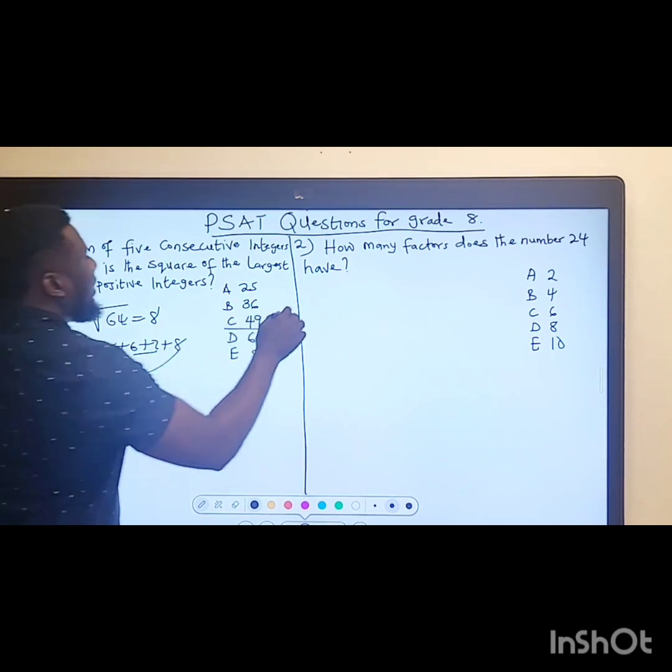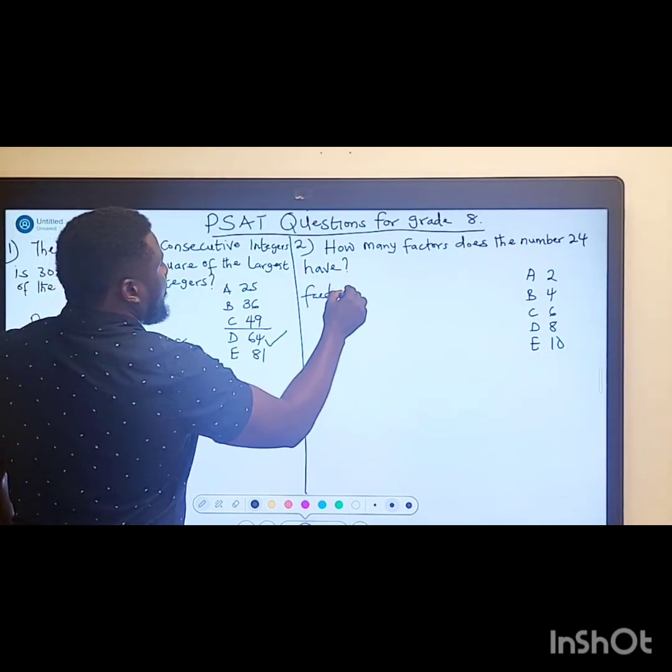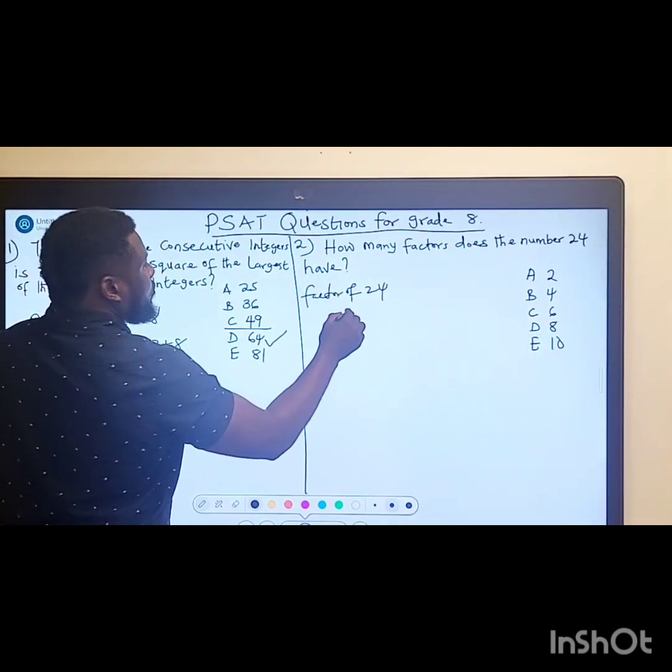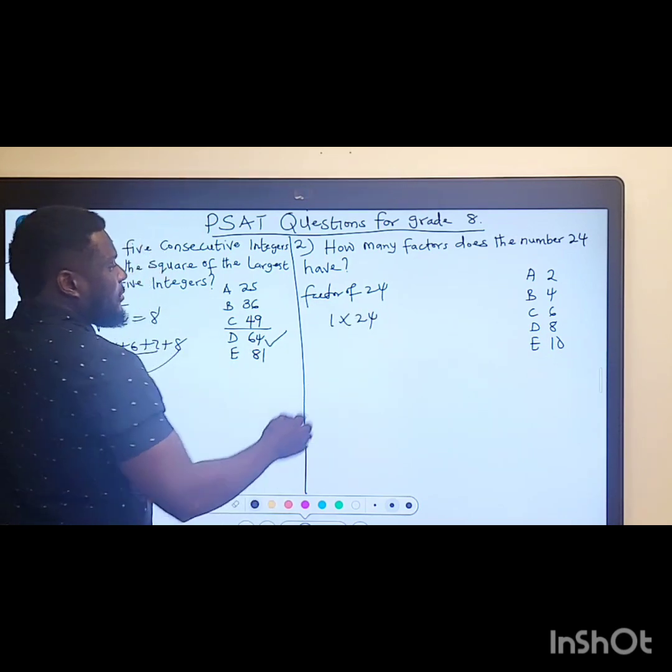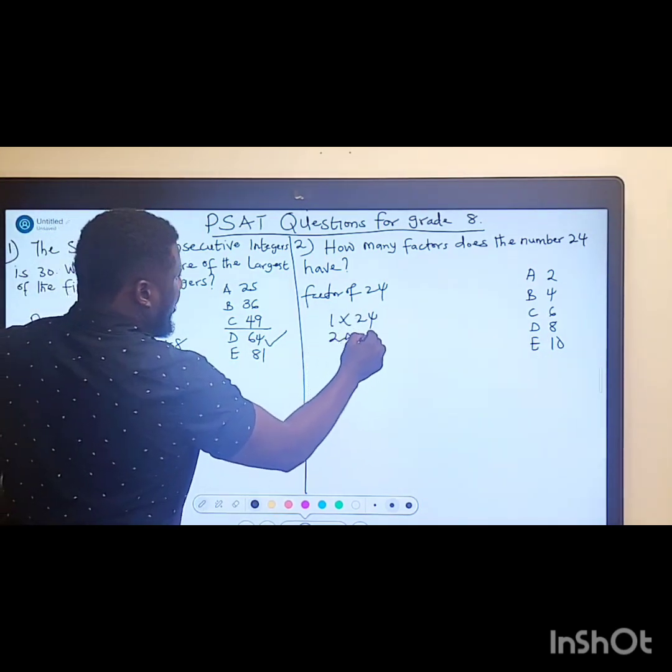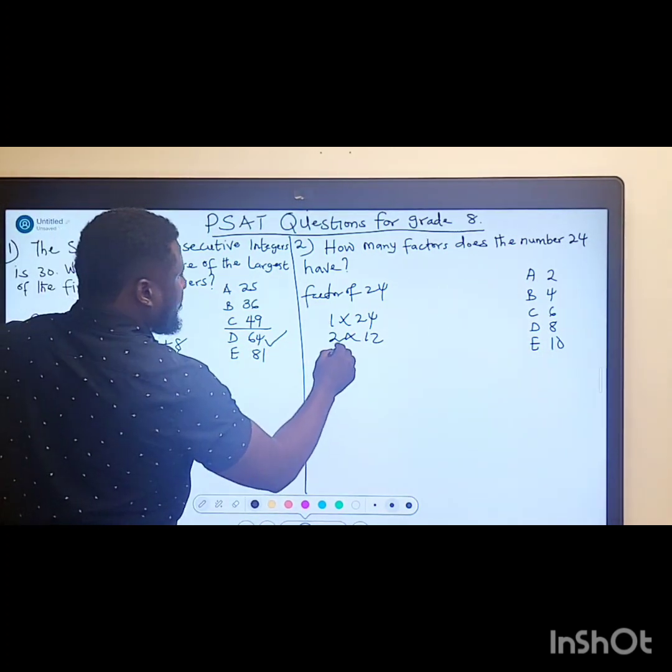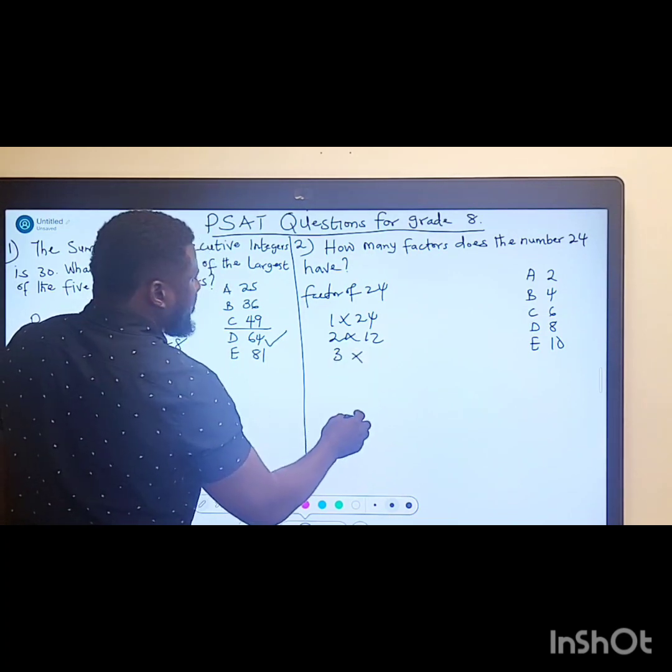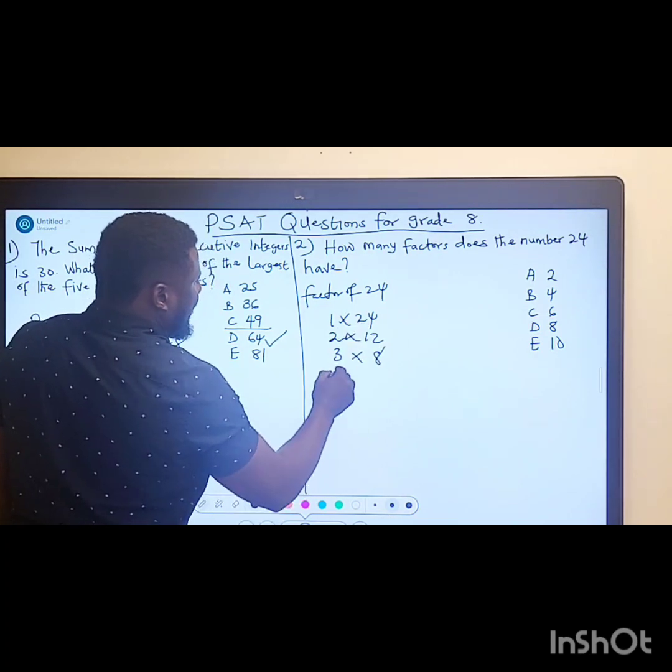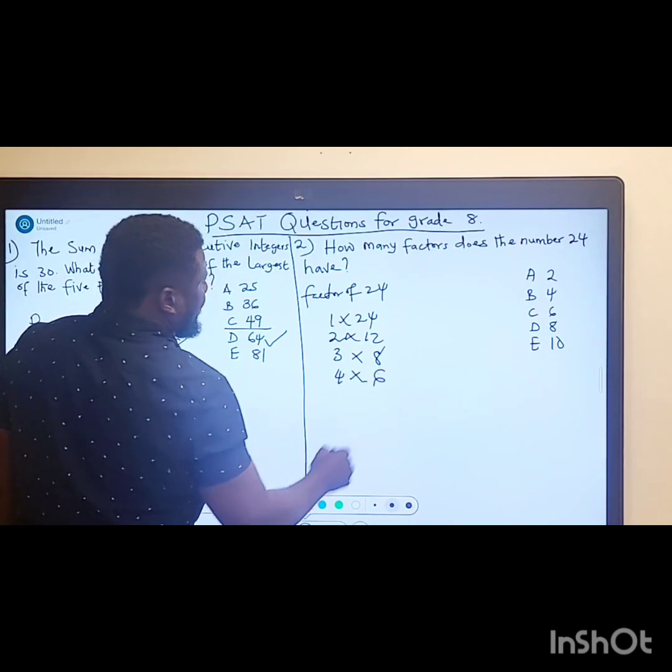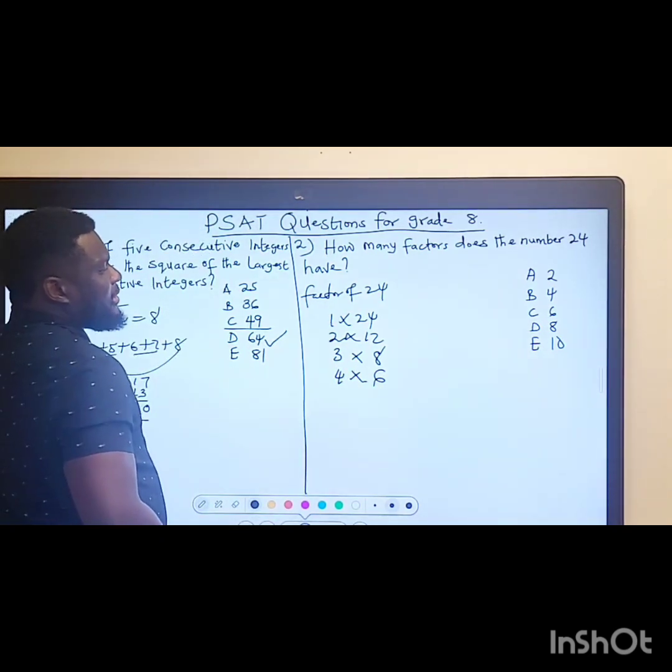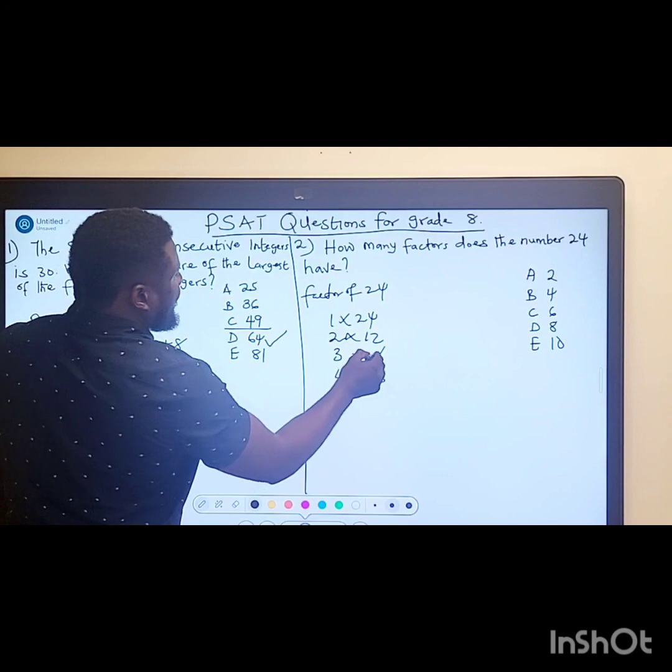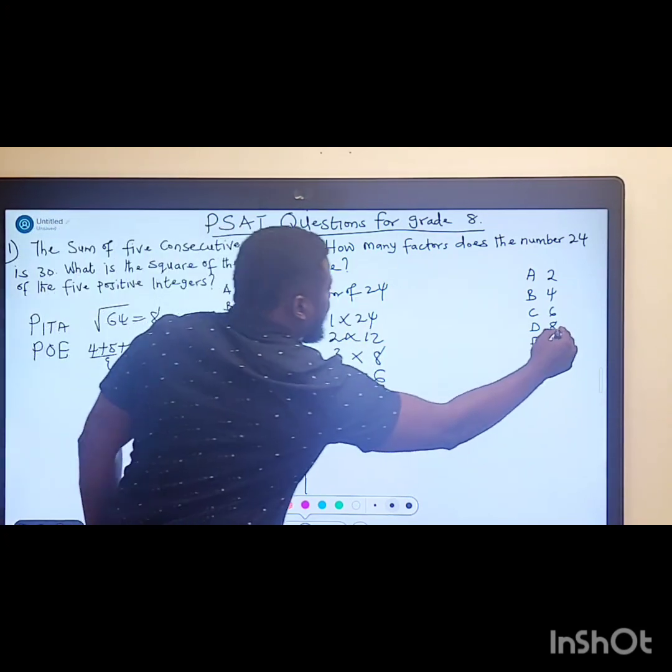Very simple, go straight to the point. What are the factors of 24? Start forwards: 1 × 24, also 2 × 12, 3 × 8, and 4 × 6. These are all the factors of 24. If we count all these together we get 1, 2, 3, 4, 5, 6, 7, 8, so D is the answer.